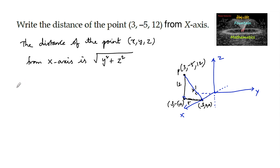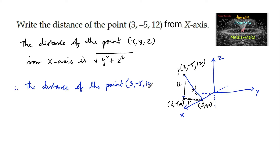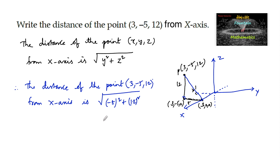Hence the distance of the point x, y, z from the x-axis is root of y squared plus z squared. Therefore, the distance is root of 5 squared plus 12 squared, which is root of 25 plus 144, that is square root of 169, which is 13. So the distance is 13 units.